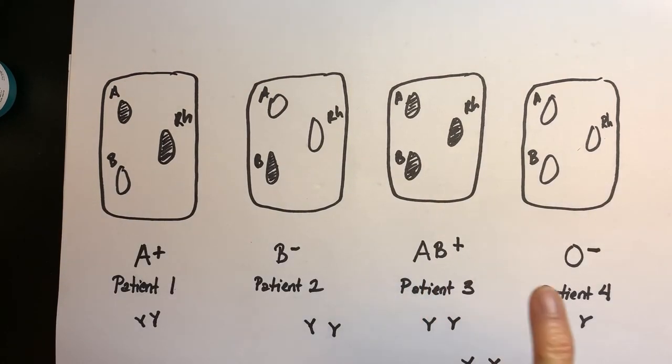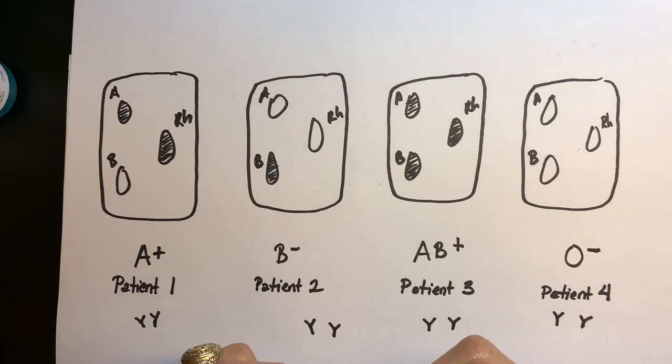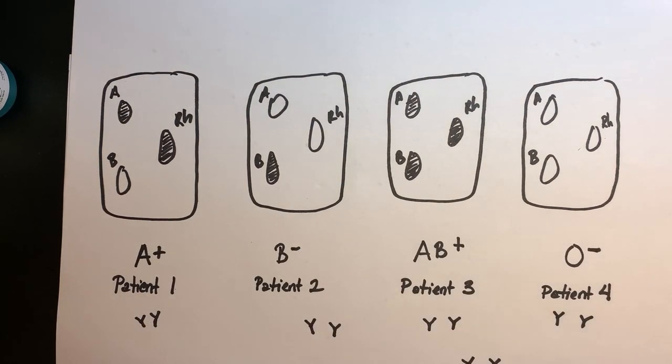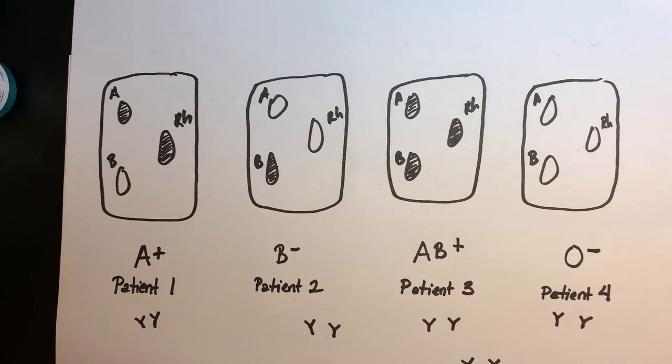All right, you need to look up what A, B positive means and what O negative means in the relationship to the universal recipient and the universal donor status.